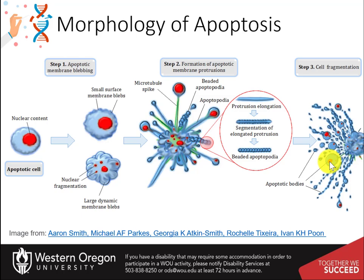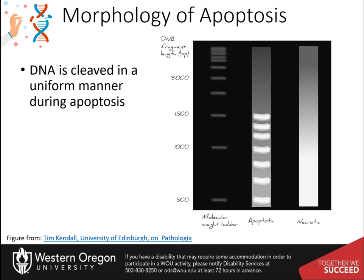Two types of blebs are recognized in apoptosis. Initially, small surface blebs are formed. During later stages, larger, so-called dynamic blebs may appear, which carry larger organelle fragments, such as larger parts of the fragmented apoptotic cell nucleus. Another key feature of the apoptotic cascade is that DNA of apoptotic cells is cleaved in a uniform manner between histones, to create a ladder when separated on agarose gel.